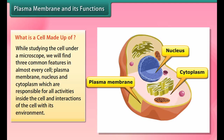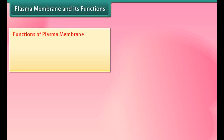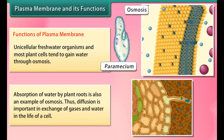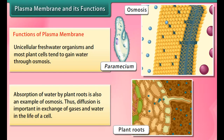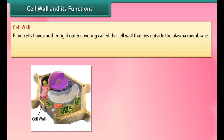While studying the cell under a microscope we find three common features in almost every cell: plasma membrane, nucleus, and cytoplasm, which are responsible for all activities inside the cell and its interactions with the environment. The plasma membrane is the outermost covering of the cell that separates the contents of the cell from its external environment. It allows or permits the entry or exit of some materials in and out of the cell, while preventing movement of some other materials. The cell membrane is therefore called a selectively permeable membrane.